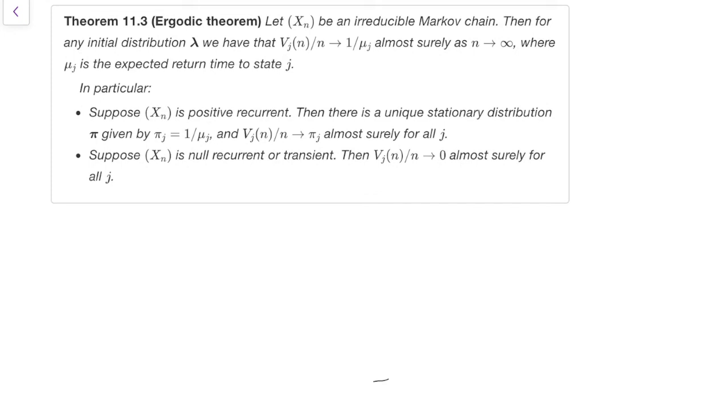So let X_n be an irreducible Markov chain, as always, and we're not at any initial distribution. And what we have is this: the long-run proportion of time tends to be 1 over the expected return time, again, that we saw in the limit theorem. And so, again, we can split into cases depending on whether we're positive recurrent, in which case that mu_j is finite, or the null-recurrent transient case where that mu_j is infinite, so its reciprocal is 0.